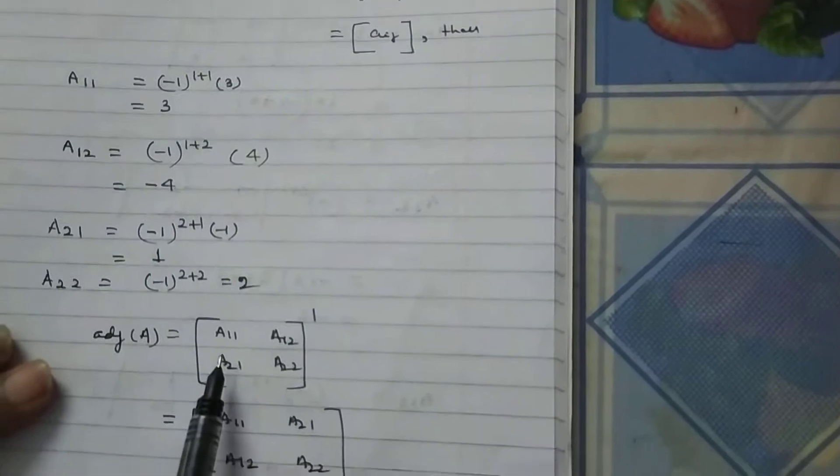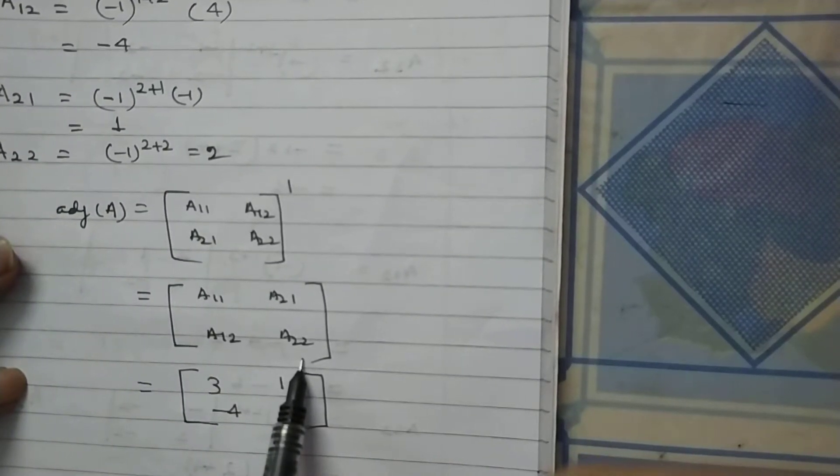Adjoint of A is transpose of cofactor of the elements of matrix A. So, it will be A11, A12, A21, A22 and transpose of A11, A12, A21, A22 is A11, A21, A12, A22.